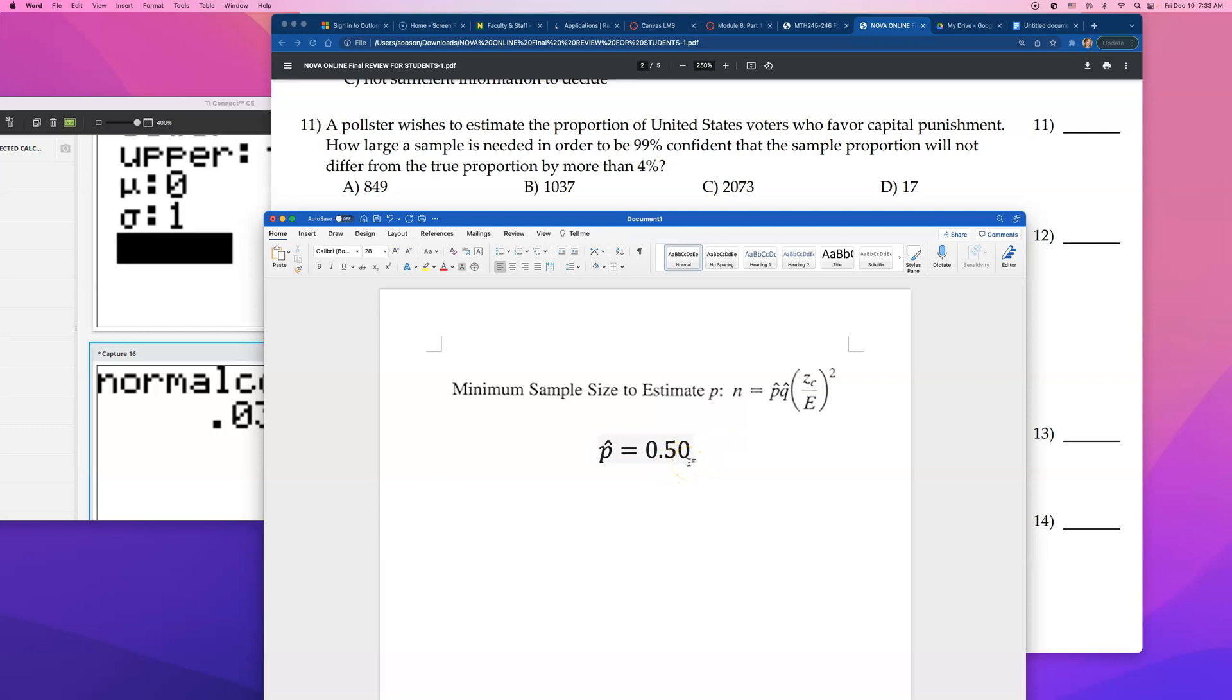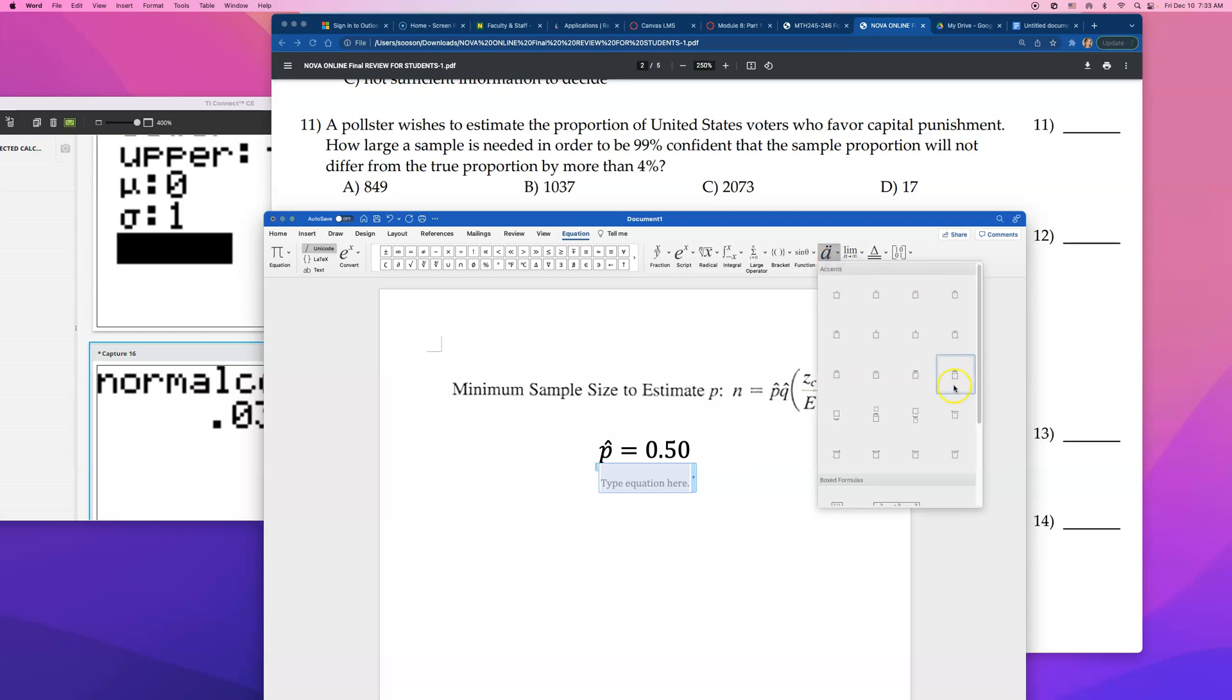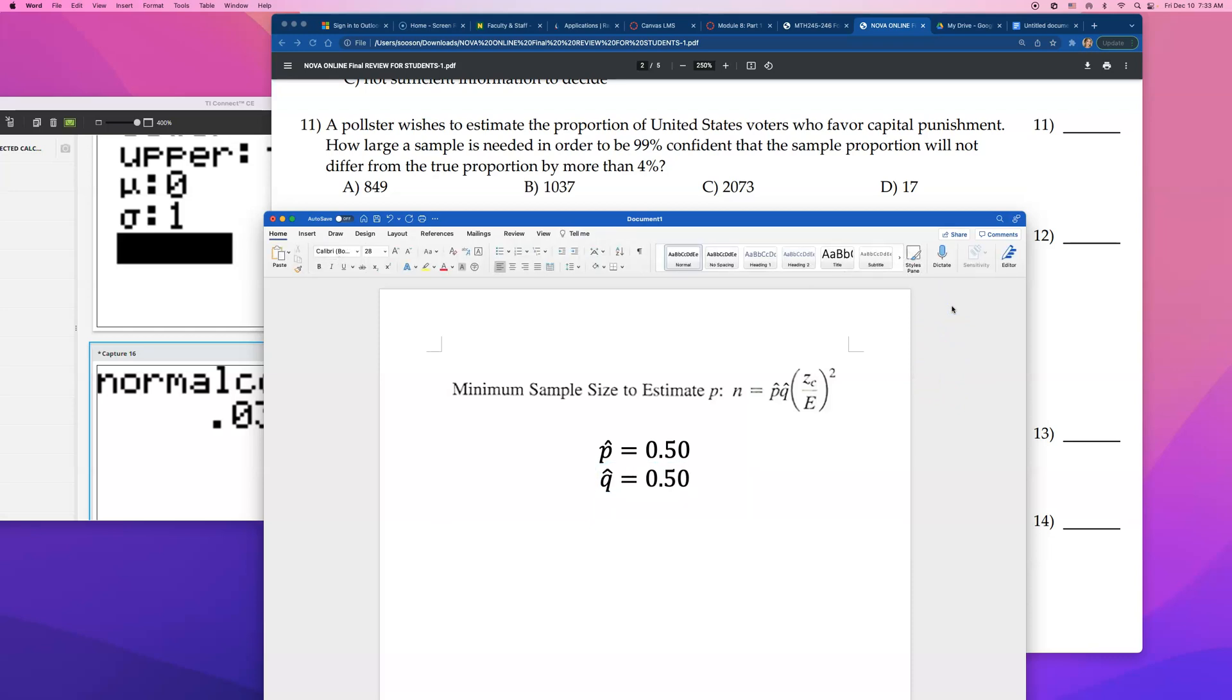If there is no preliminary estimate available, you will use 0.50 for P hat. Like we have no idea what it is, so we're just going to go ahead and say there's a 50-50 chance. Now, if P hat is 0.50, what is Q hat? P hat is the estimated probability of success or estimated proportion of people saying yes, they favor capital punishment. So what is the probability of them saying no, they don't support it? That will be just a complement, right? Q hat is going to be another 50% because they add up to one together.